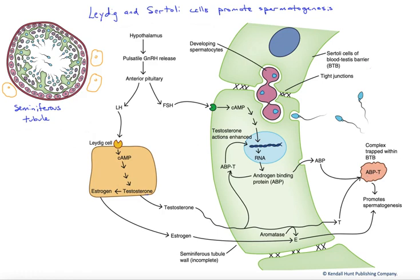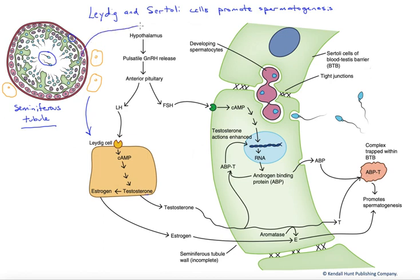In this figure, let's examine how Leydig and Sertoli cells both promote spermatogenesis and function together to do so. We've got a seminiferous tubule in the upper left, formed by spermatogonium on the outside, which divide and differentiate to produce sperm in the lumen. We also have the Sertoli cell in green, which forms a blood-testis barrier. On the outside, we have the Leydig cells. We'll blow up both cell types to show their functions.